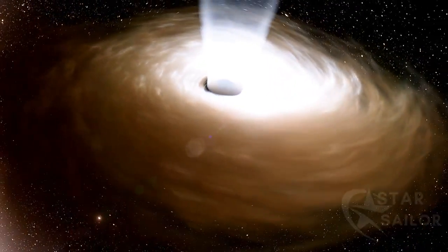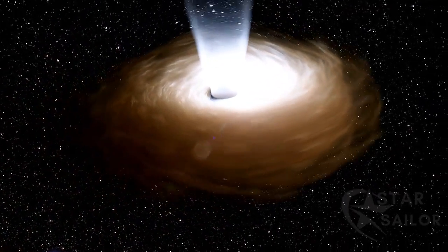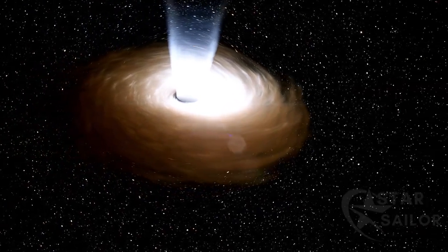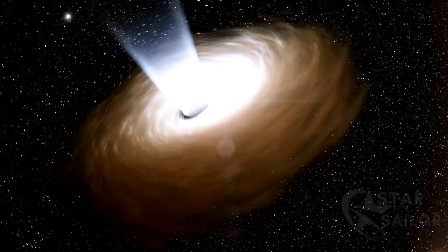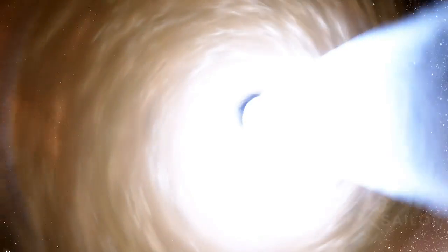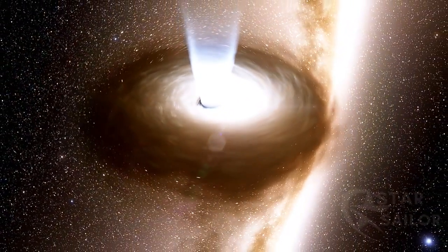In comparison, the black hole at the center of the Milky Way, Sagittarius A star, has a mass of about 4 million times that of the Sun and is relatively quiet. The intense activity of APM's black hole makes it one of the most powerful objects known. This quasar's luminosity is equivalent to that of a thousand galaxies combined, making it a beacon visible across vast cosmic distances.